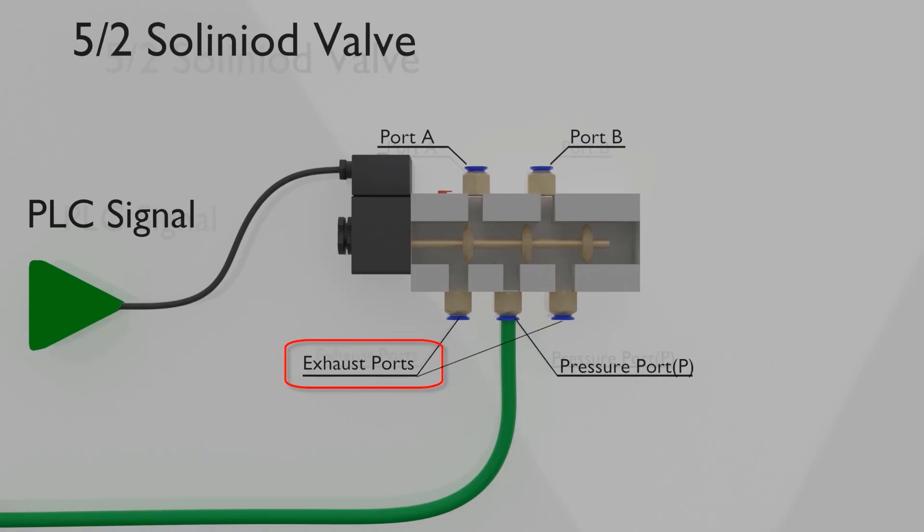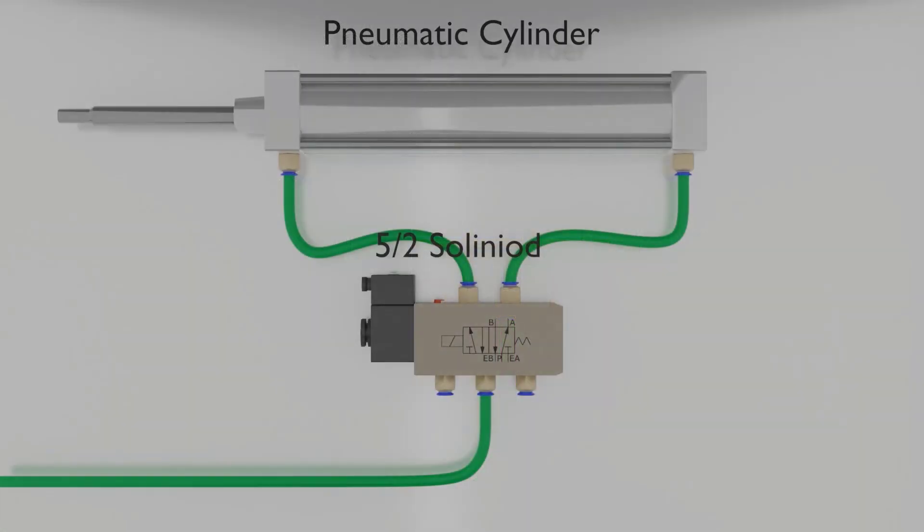We will now see how does this 5/2 way valve control the double-acting pneumatic cylinder to control linear motion of the cylinder shaft. We will connect port A and port B of the solenoid valve to the ports of the cylinder with pneumatic pipe.